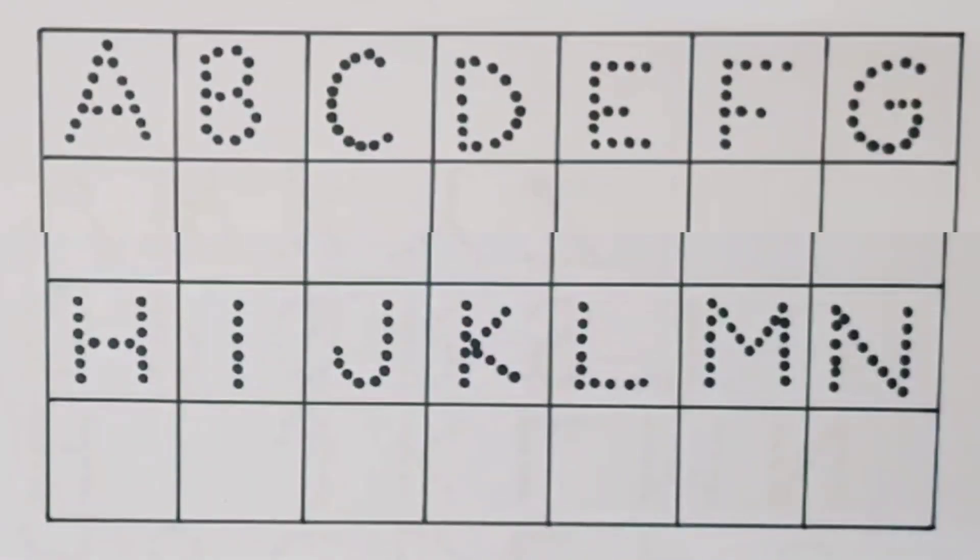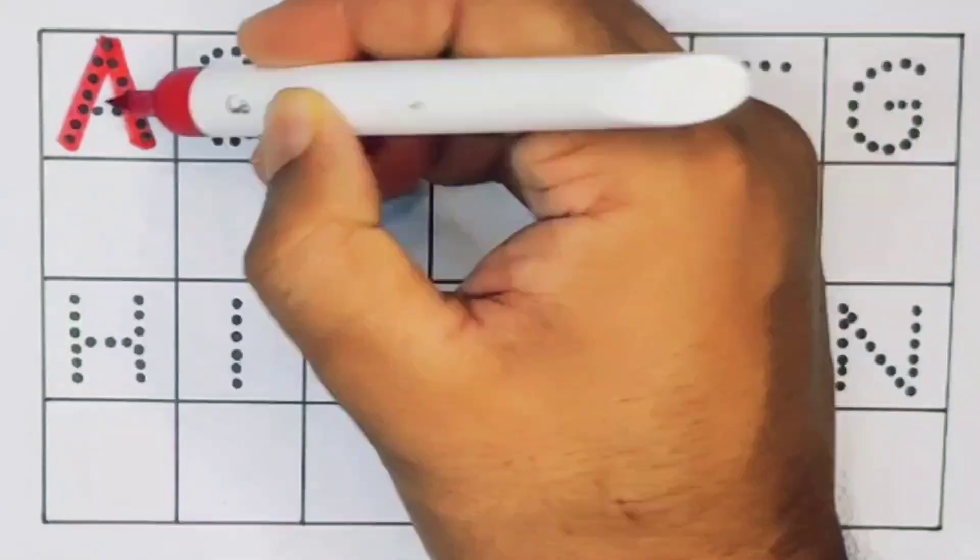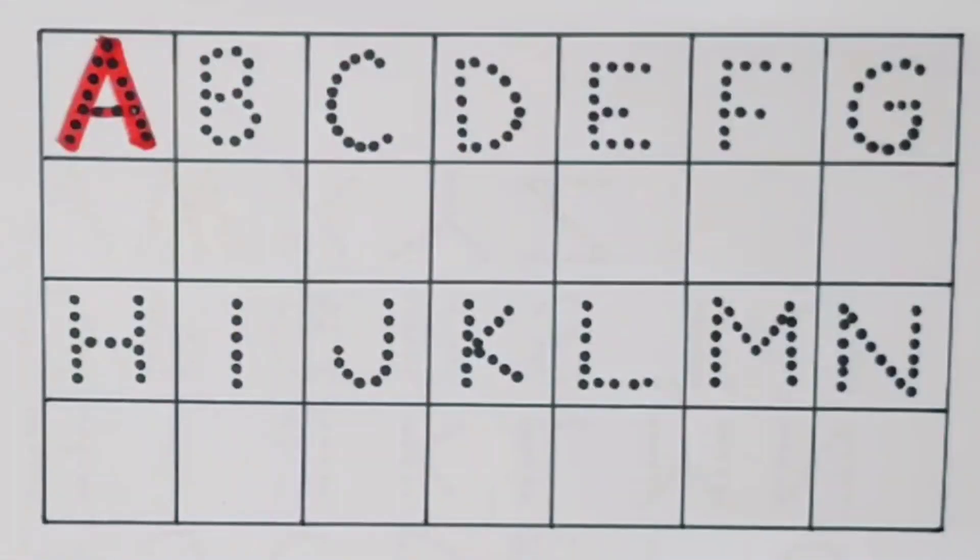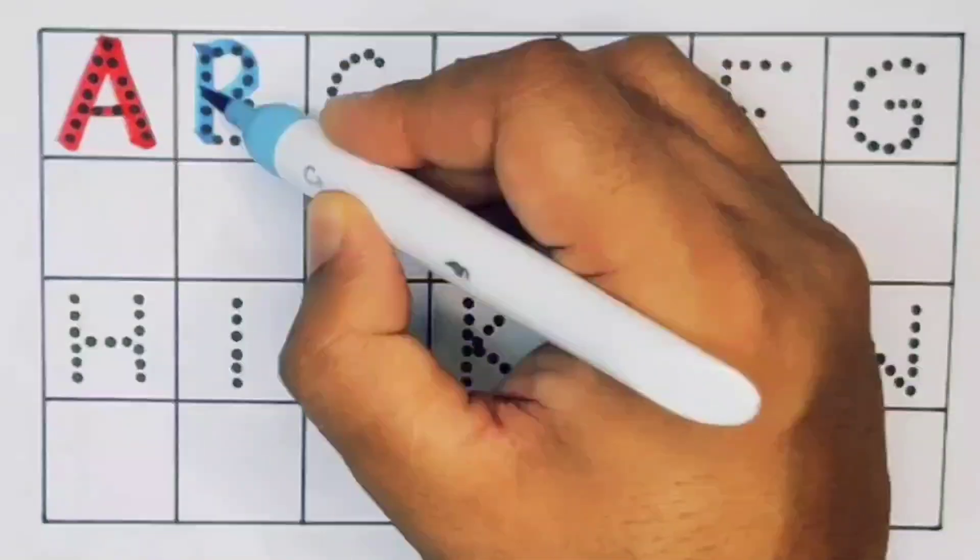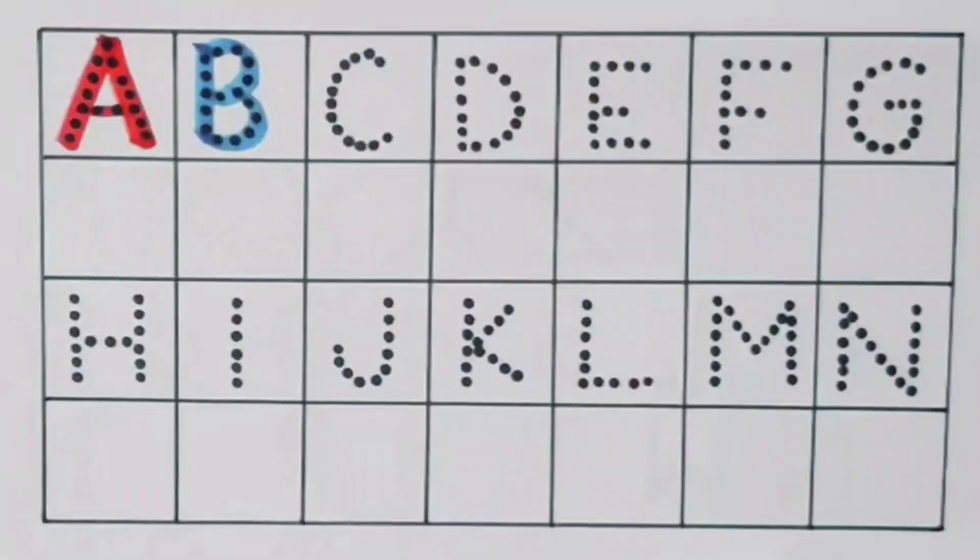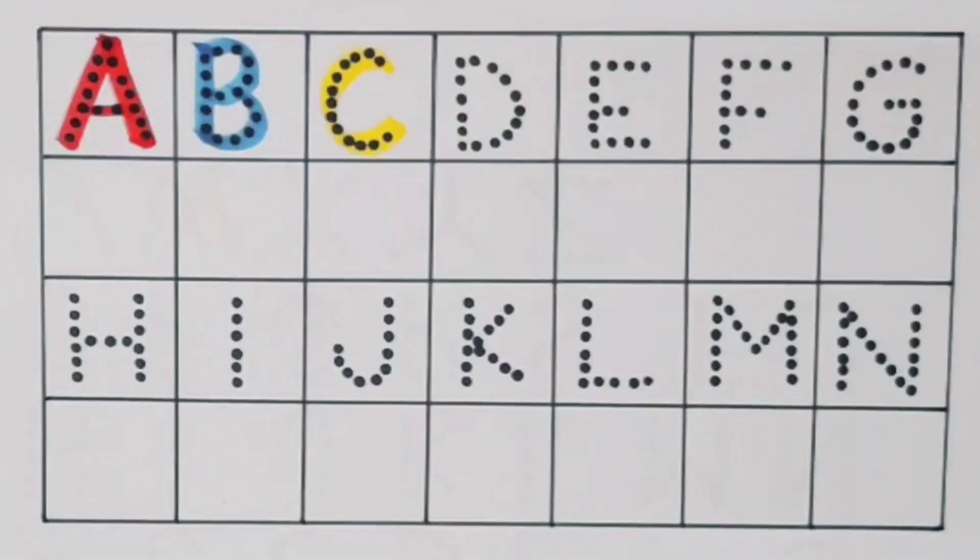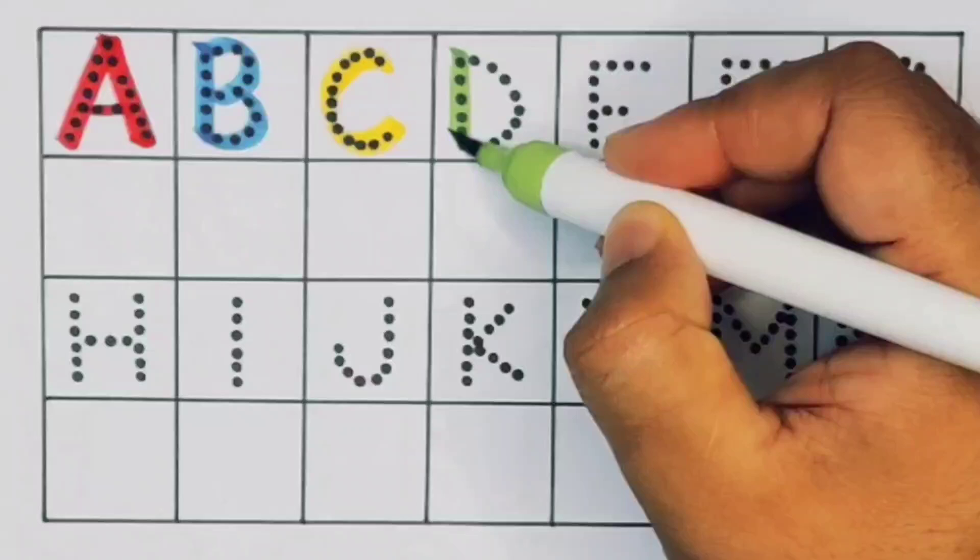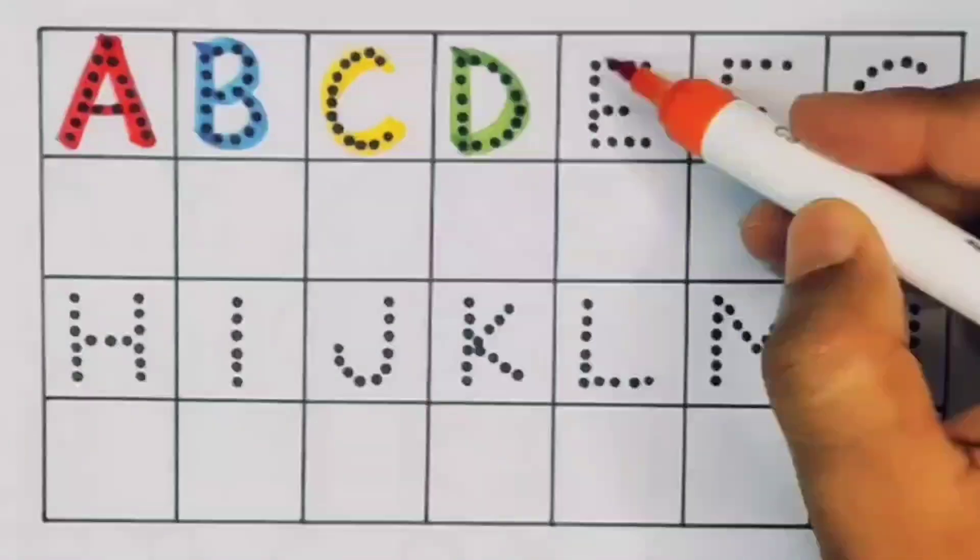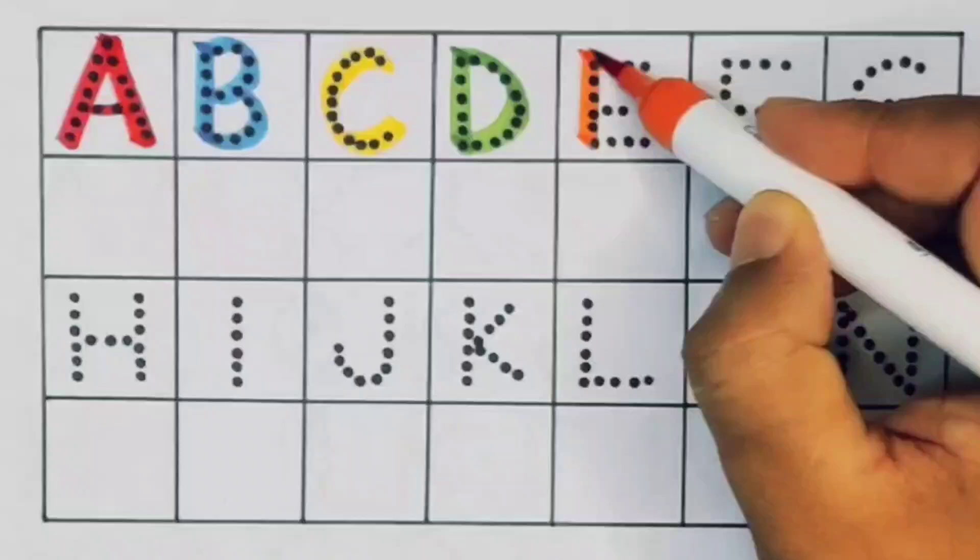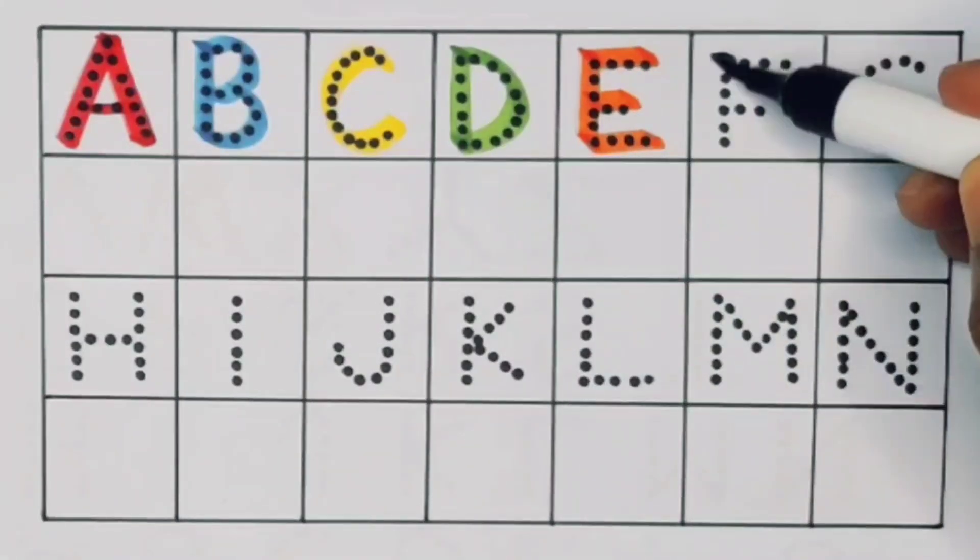First, A, A for aeroplane. Next, B, B for bus. Next, C, C for cow. Next, D, D for drum.